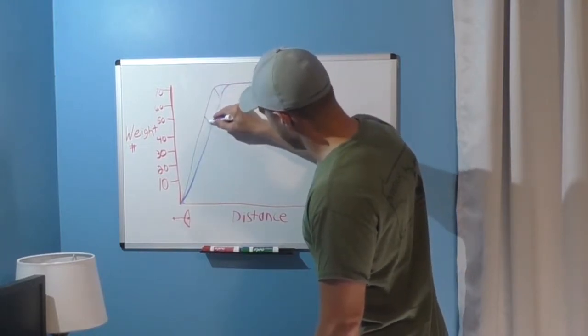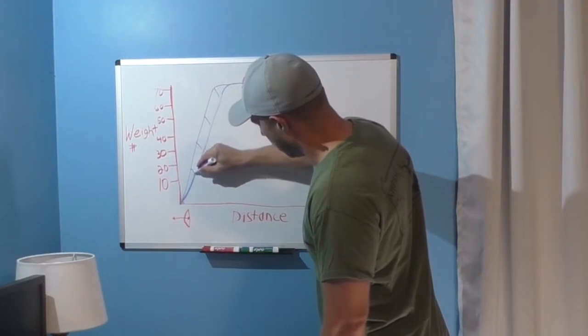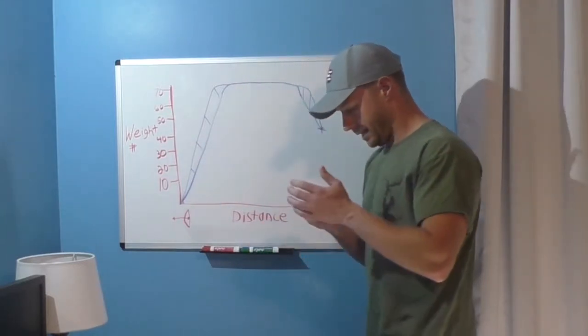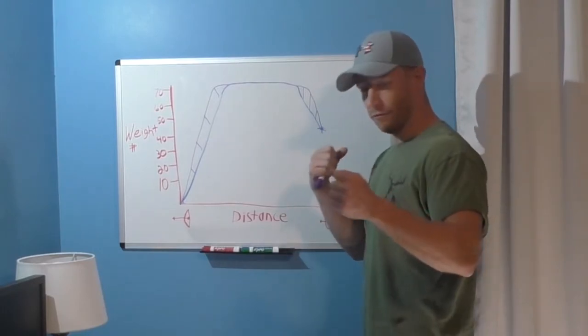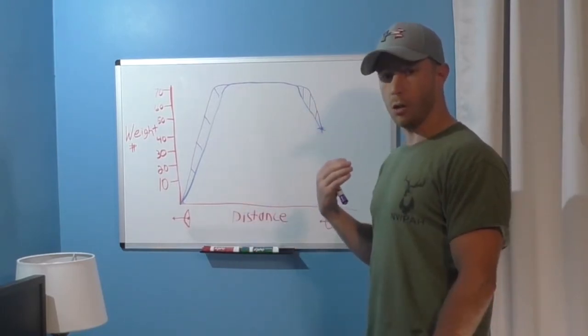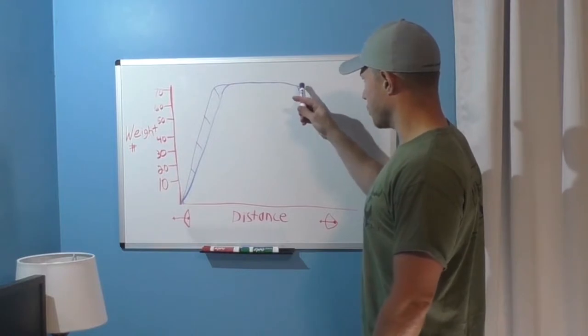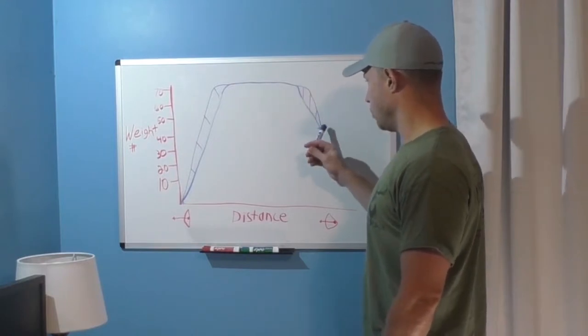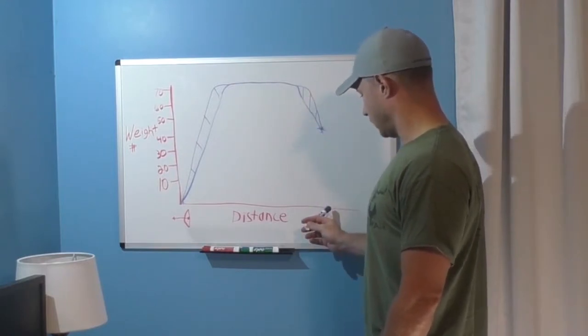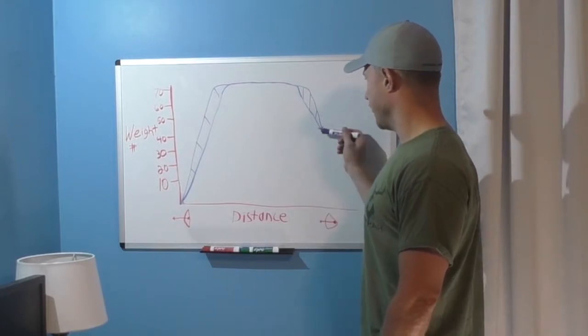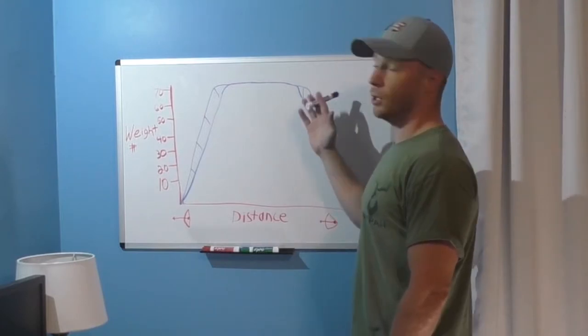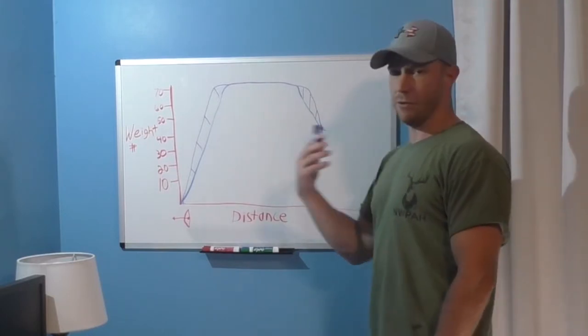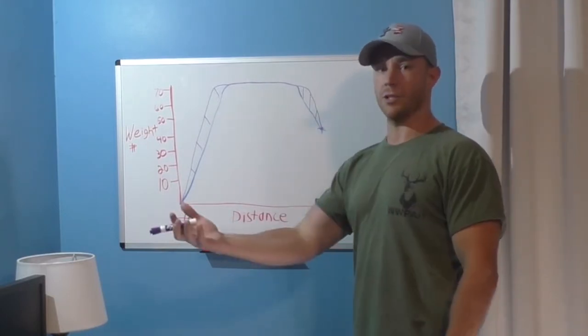Now a lot of times there'll be a complaint with a speed bow and that's that it feels like it wants to rip your arm out of the socket if you don't hold it very sternly against that back wall and that's because of this extra little area right here. If you let off holding it just a little bit and it pulls forward the amount of force that it's going to recover is going to go up and it's going to give you that feeling of wanting to rip your arm out of the socket.